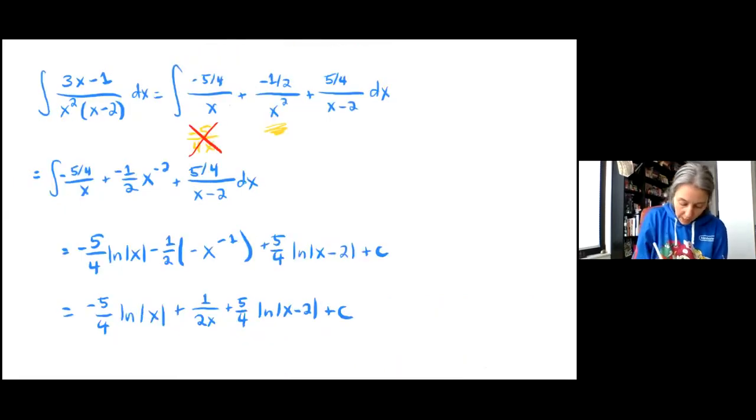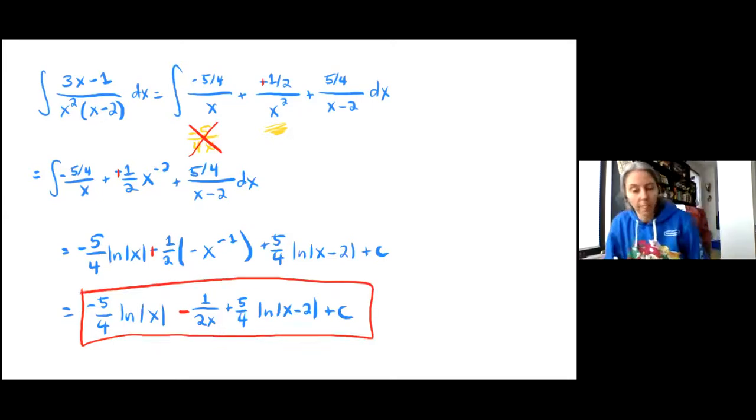Just realized that B is actually positive 1 half, so we'll just go back and fix that. I have negative issues. We all know I have negative issues. So anyway, that means that this will actually be a minus sign right there. There we go. So this is our final answer. That's all. Bye.